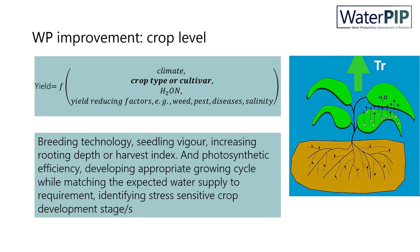At crop level, one could consider improving water productivity through breeding technologies that improve seedling vigour, increase rooting depth, and also harvest index. Those improvements at cultivar level could also bring improvement in transpiration efficiency, photosynthetic efficiency, and developing an appropriate growth cycle that matches the expected water supply to requirement, as well as identifying stress-sensitive crop development stages.